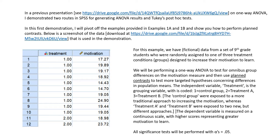We'll then use planned contrasts to test more targeted hypotheses concerning differences in population means. Our treatment variable is coded one for control group, two for treatment A, and three for treatment B. The dependent variable is measured on a continuous scale with higher scores representing greater motivation to learn.